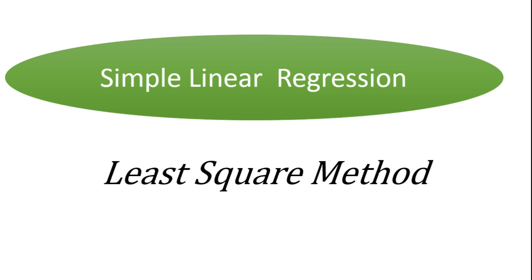Hi everyone and welcome to this ultimate tutorial video on simple linear regression by the least squares method. The problem of simple linear regression arises when you have two variables with observations over a period of time. When you plot a scatter of the two variables — representing the first variable on the x-axis and the second on the y-axis — you get a visual representation of both variables in the plane.